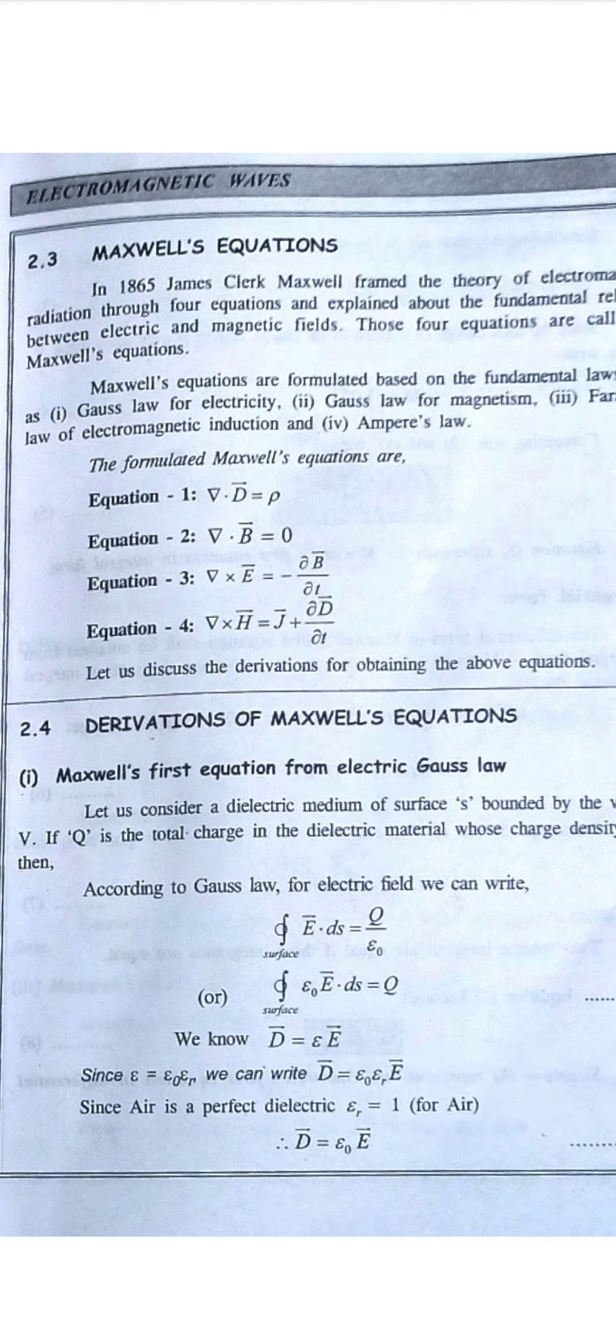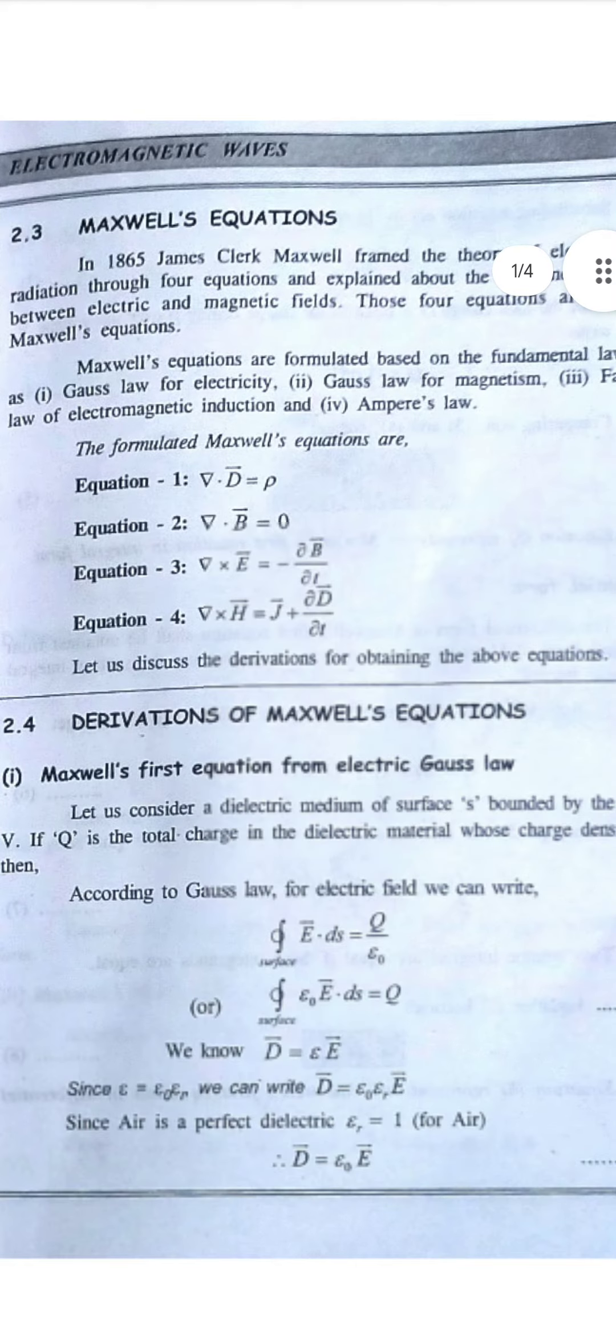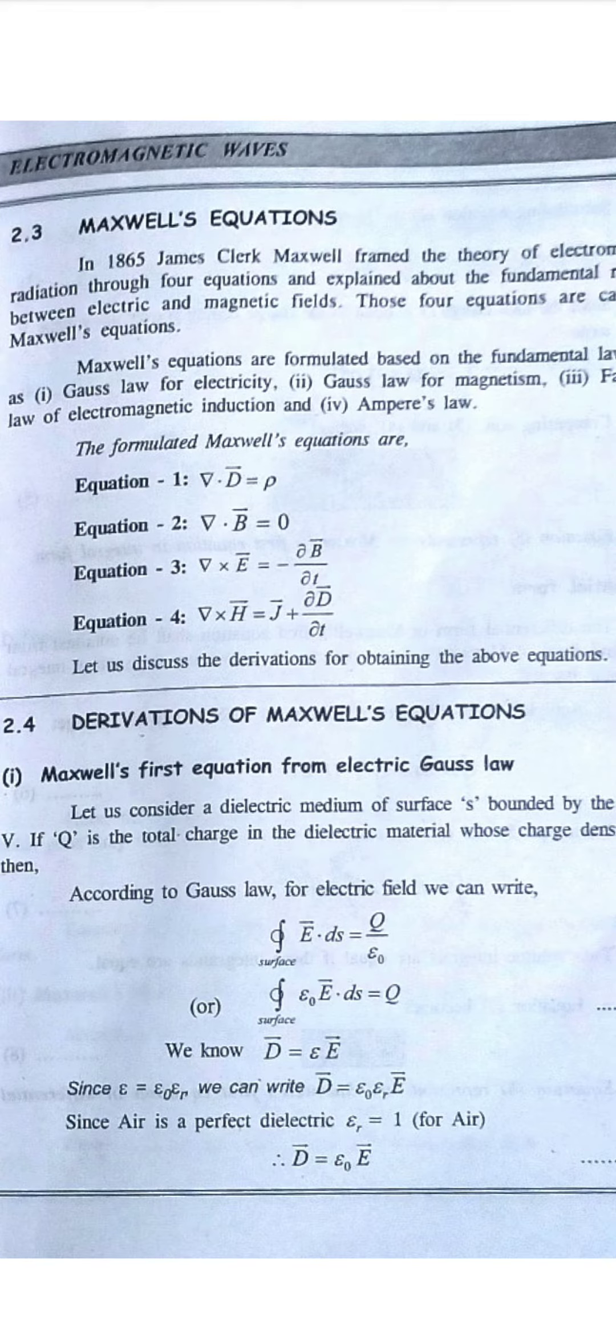The first equation is from Gauss's law in electrostatics. The second equation is from Gauss's law for magnetostatics. Equation three is Faraday's law, and equation four is Ampere's circuit law.